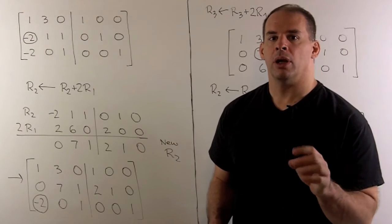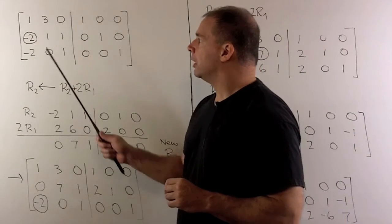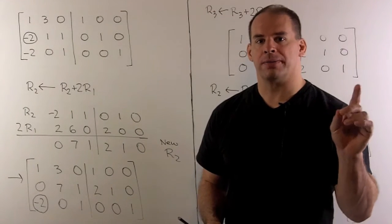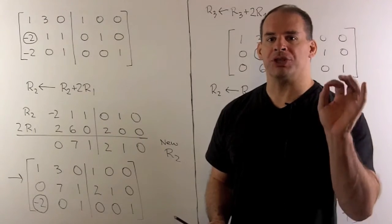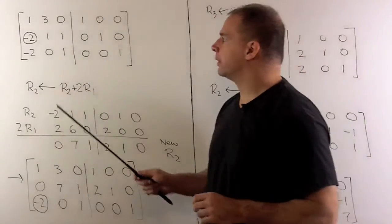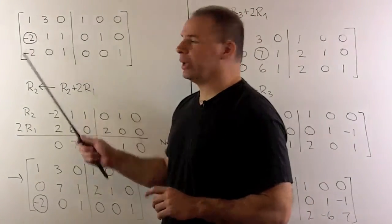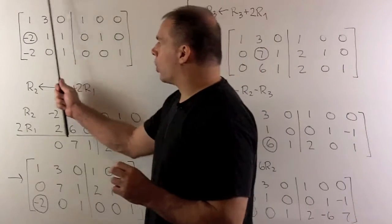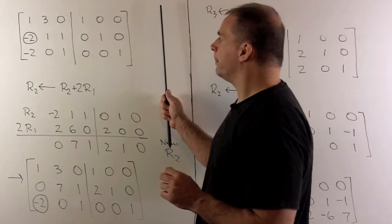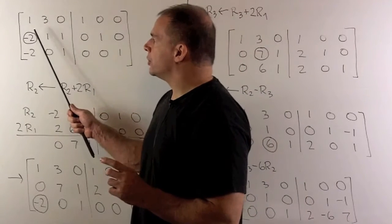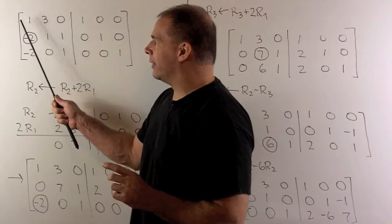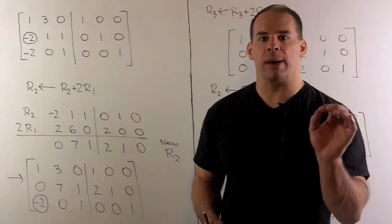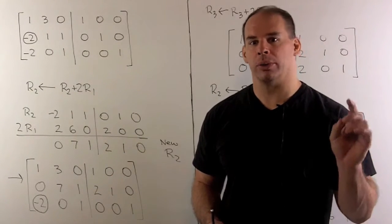Now, we start in the upper left-hand corner. We want a 1 there. We already have a 1, so the first step is taken care of. So, I proceed to the entry below the 1. We want to turn this minus 2 into a 0. How do we do that? Well, we're going to ignore everything from the second column on. How do I multiply by this 1 and add to the minus 2 to get 0? I take 2 times 1, add it to minus 2, we get 0.